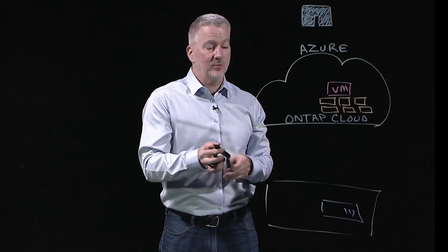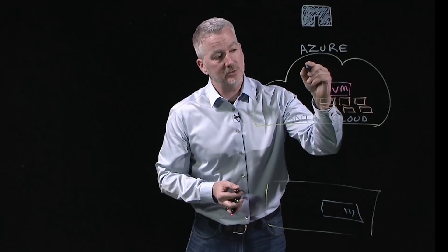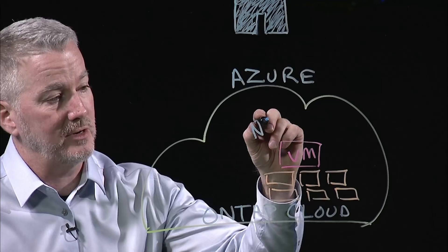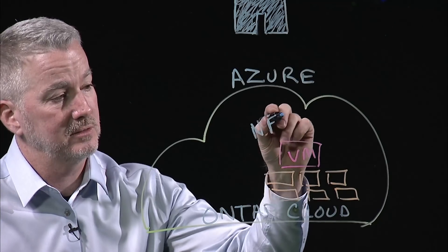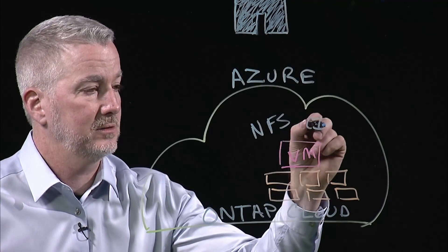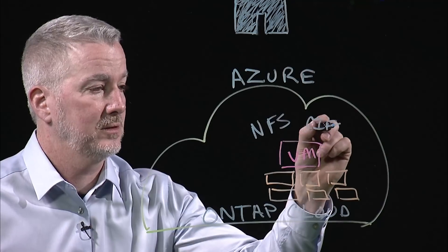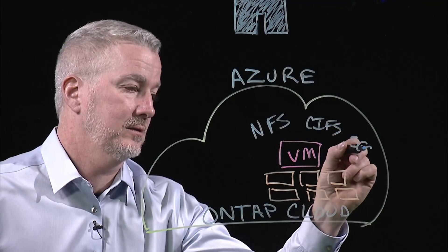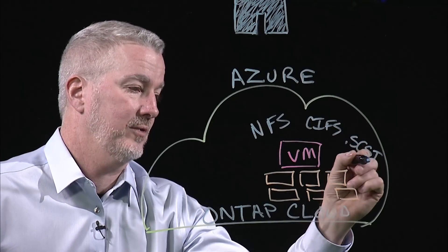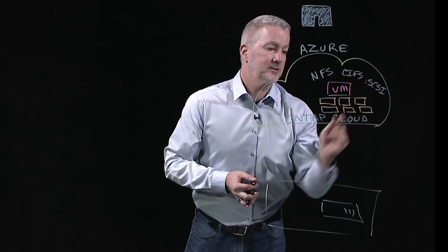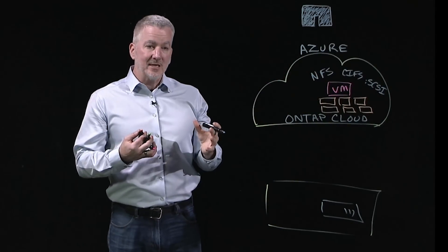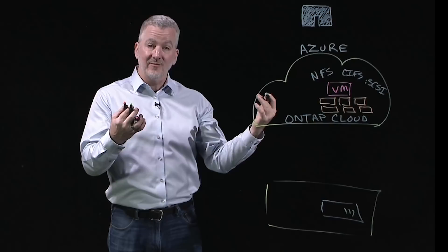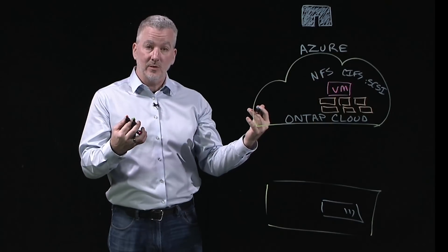One of the key benefits is that ONTAP Cloud provides access and storage endpoints for NFS, CIFS, and iSCSI. This provides you access for both file and block protocols for any of your public cloud compute.